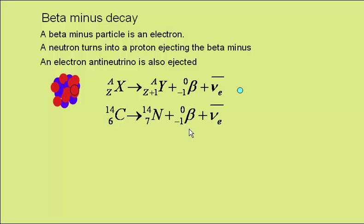Looking at a specific case, carbon-14 undergoes beta decay to become nitrogen-14.